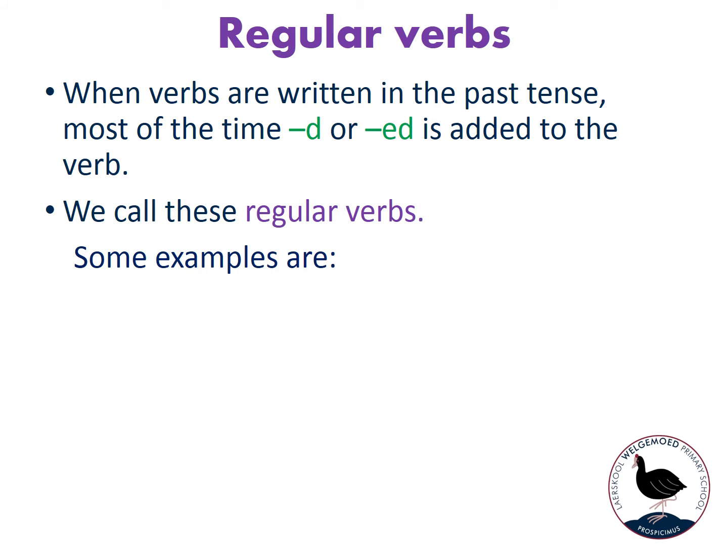Next we're going to take a look at regular and irregular verbs. You did this last week and now we are going to do some revision. When verbs are written in the past tense, most of the time we just add a 'D' or an 'ED', and words where you just add these letters are called regular verbs because the actual main verb doesn't change too much.